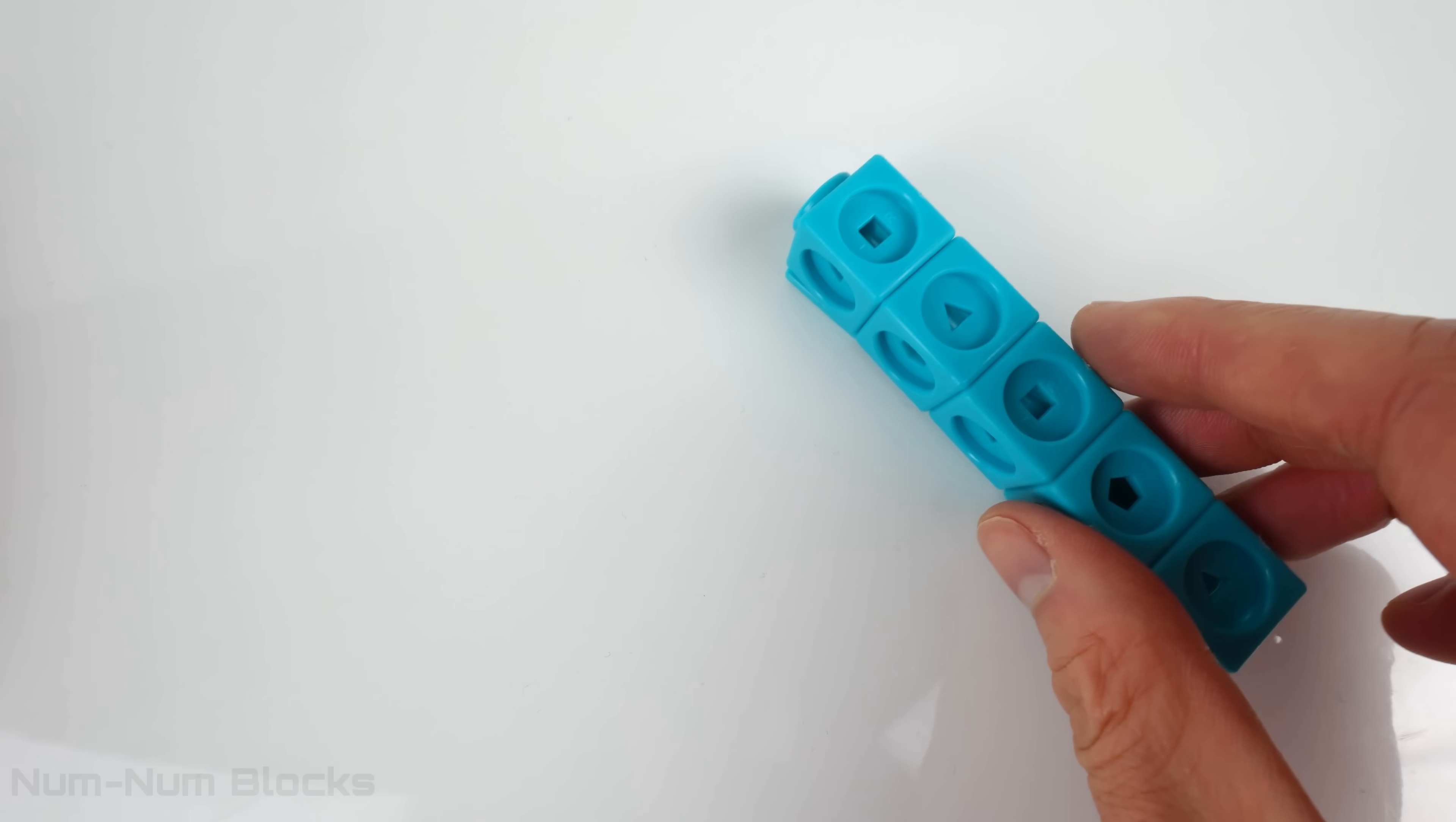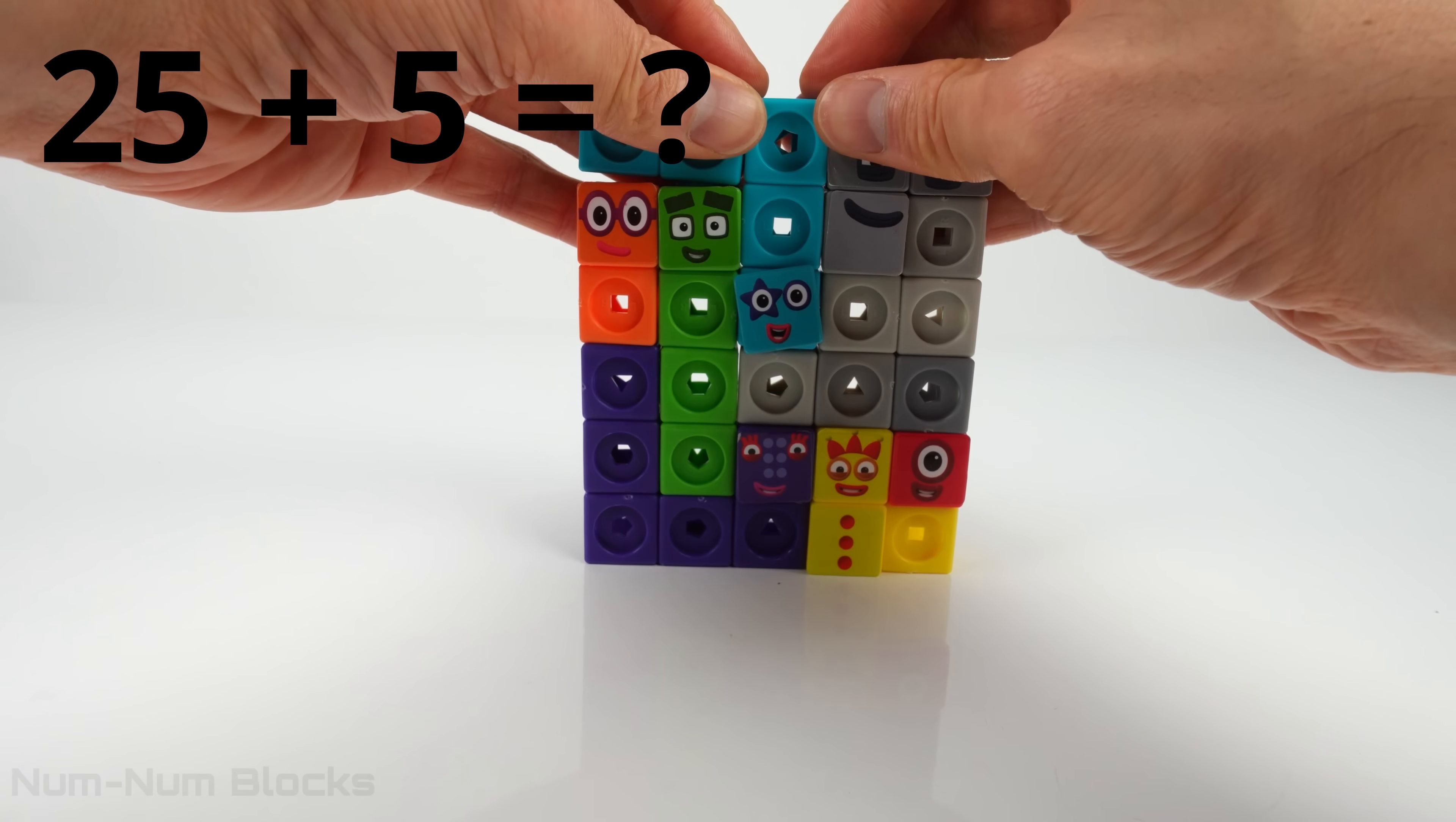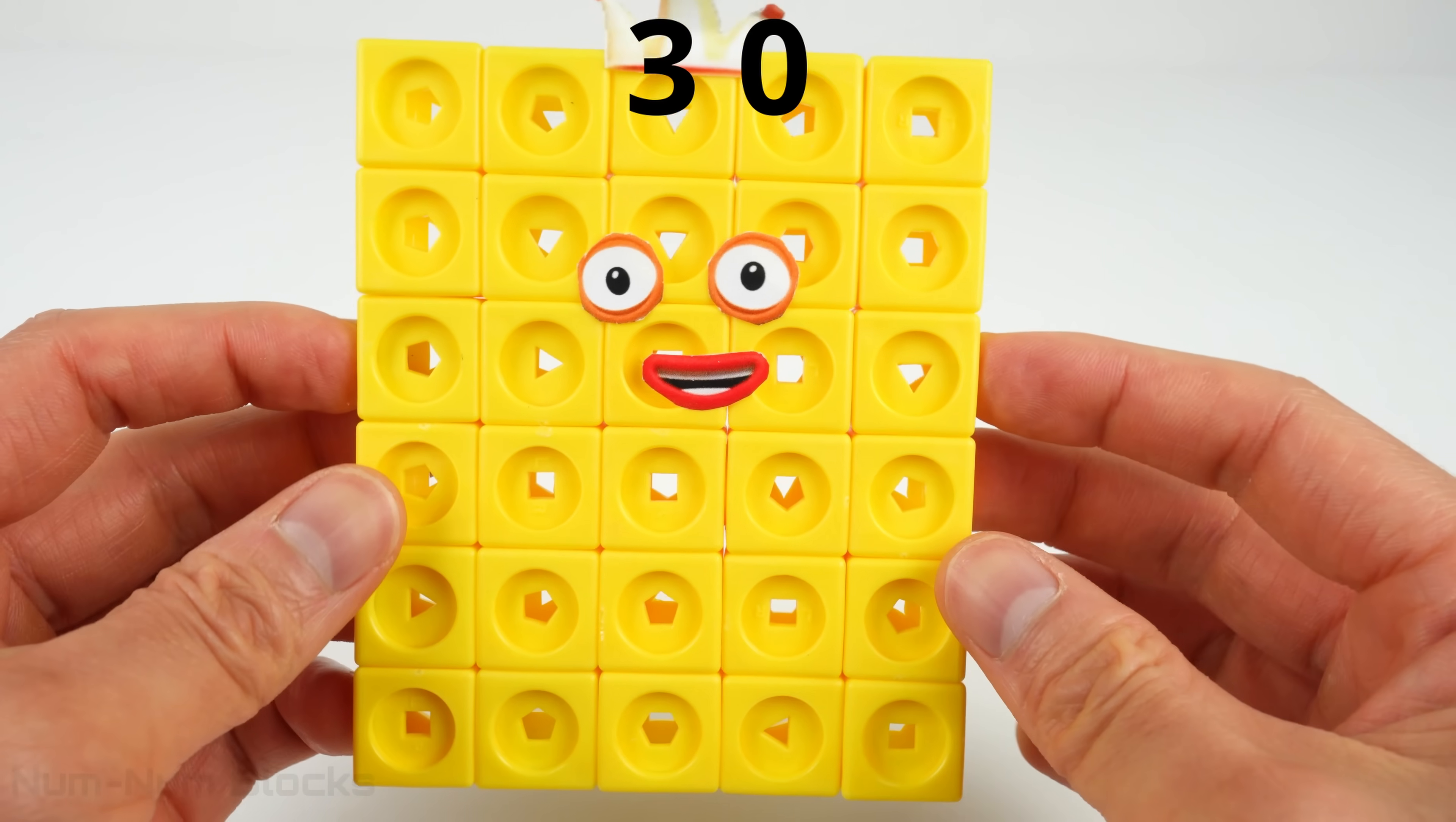We have 1 more number left. 5! It's number block 5! Let's rearrange your blocks! Now 5 can fit! What number do we get if we add 5 to 25? It's a 6 by 5 rectangle! Do you know what number this is? 30! I am 30! We built number block 30!